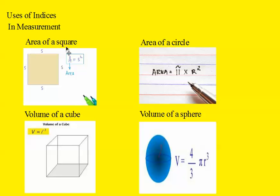When we work out the area of a square, we use the formula A equals the length of the square squared. The index is 2. When we work out the area of a circle, the area is π times the radius squared. The index is 2.